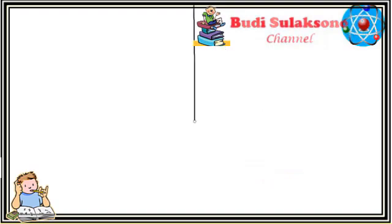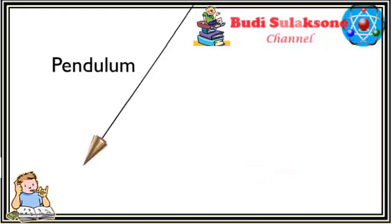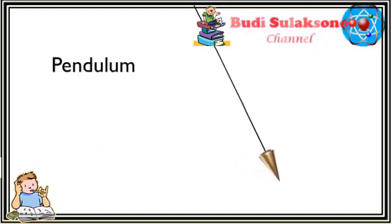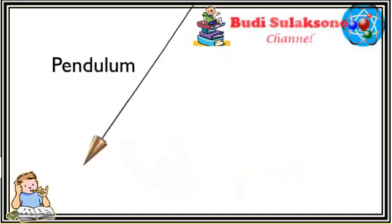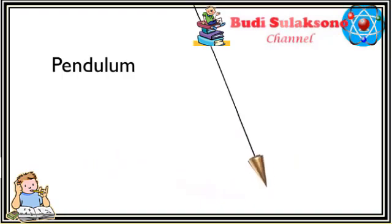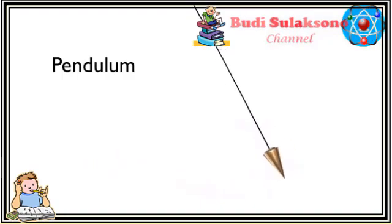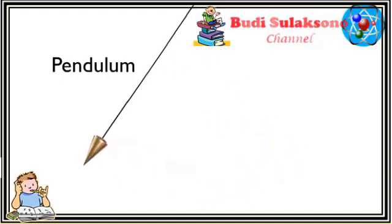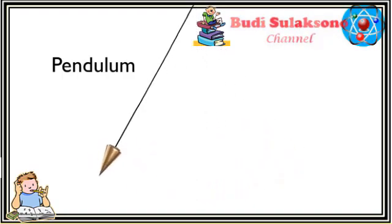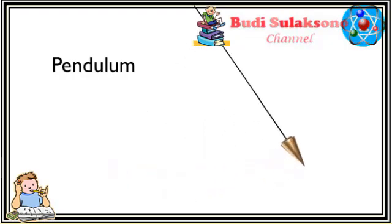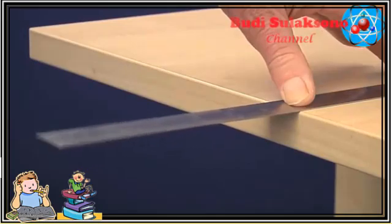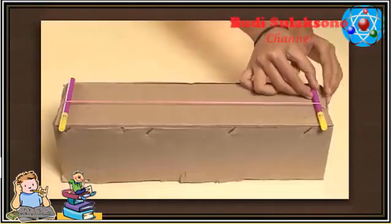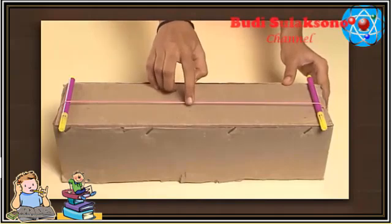Ketika pendulum tersebut kembali sampai pada titik setimbang, pendulum tidak berhenti, namun terus bergerak menjauhi titik setimbang sampai energi kinetiknya habis. Pada titik ini, benda akan kembali bergerak menuju titik setimbang pada arah yang lain. Sebuah benda dapat dikatakan bergetar jika benda tersebut bergerak bolak-balik secara teratur melalui titik kesetimbangan.